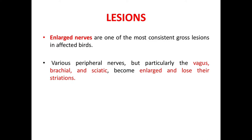Coming to the post-mortem lesions, enlarged nerves are one of the most consistent gross lesions in affected birds. Various peripheral nerves — but particularly the vagus, brachial, and sciatic — become enlarged and lose their striations.